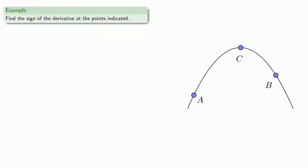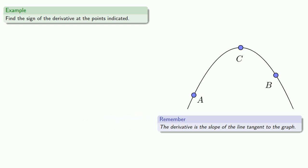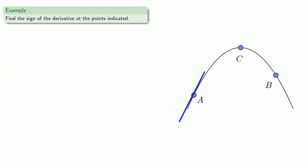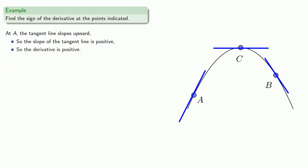So we might try to find the sign of the derivative at the points indicated. And so we have our graph. The one thing you should remember is that the derivative is the slope of the line tangent to the graph. So let's draw our tangent lines at a, b, and c. At a, the tangent line slopes upward, so the slope of the tangent line is positive, so the derivative is positive.